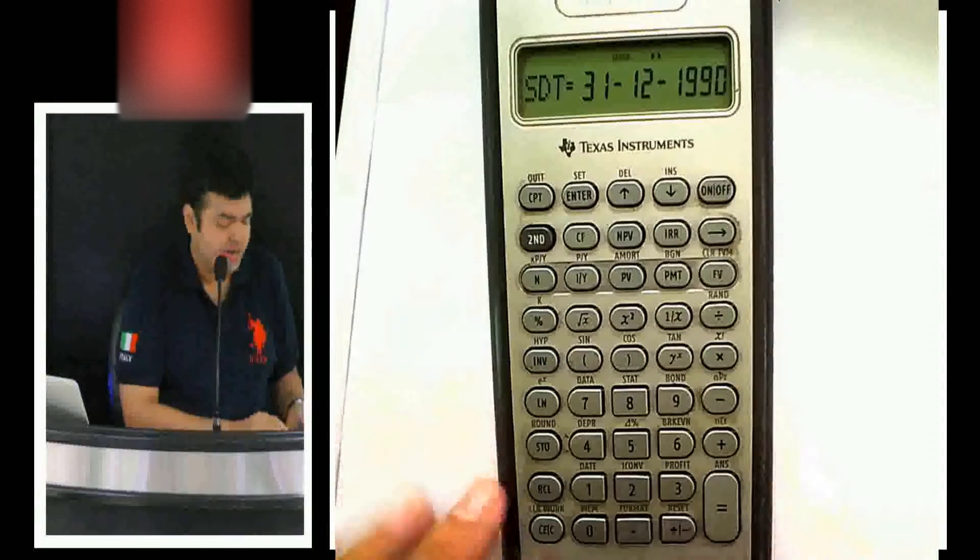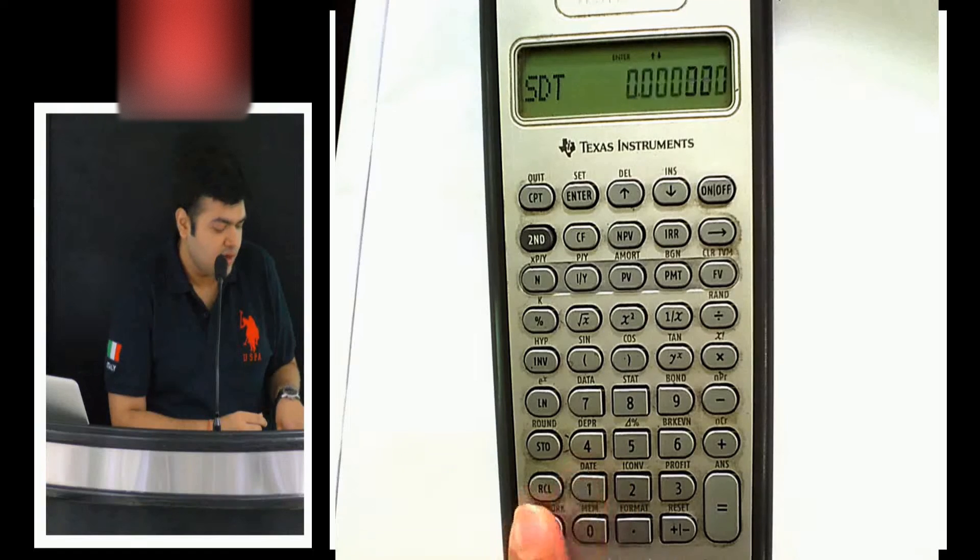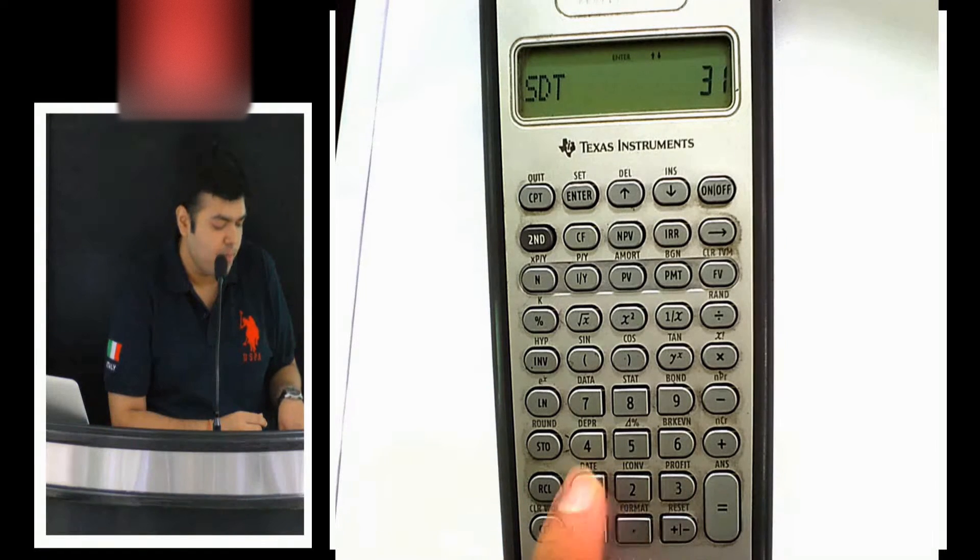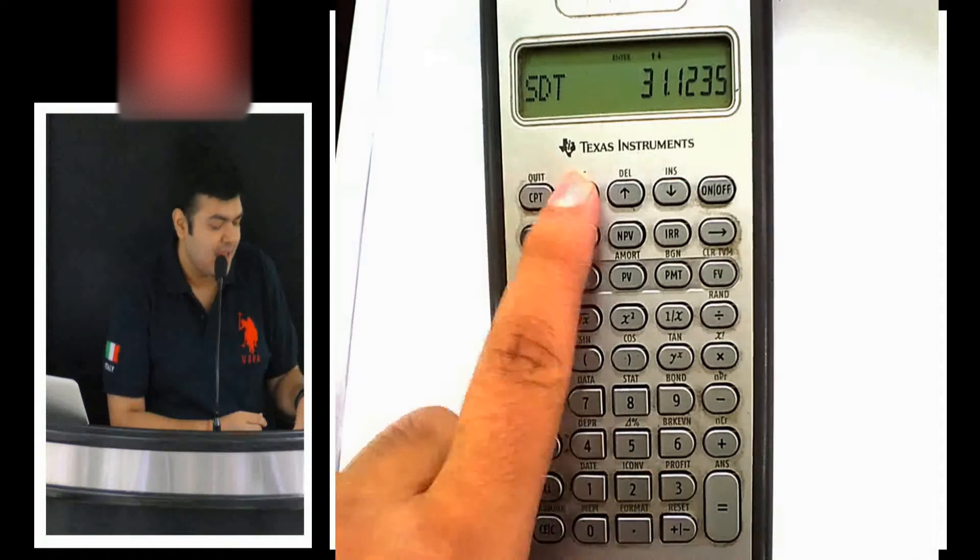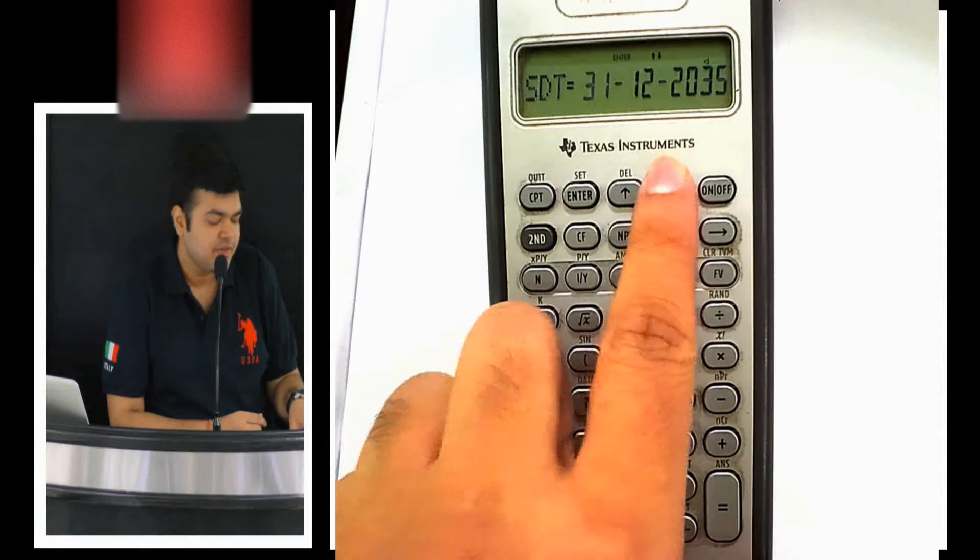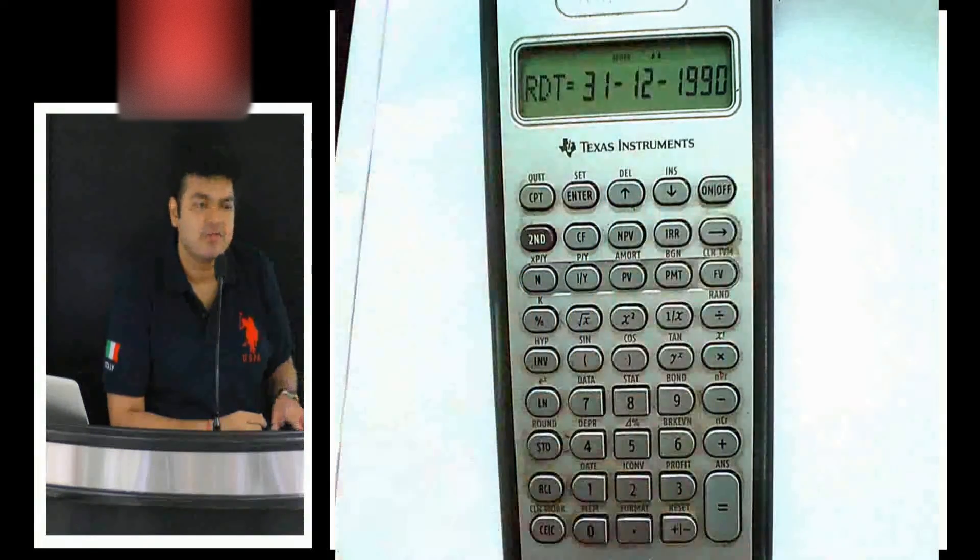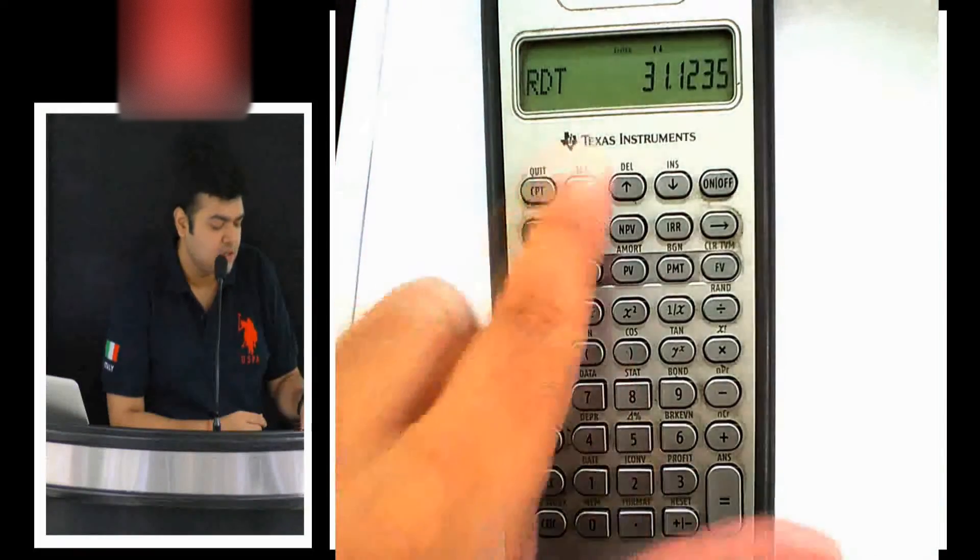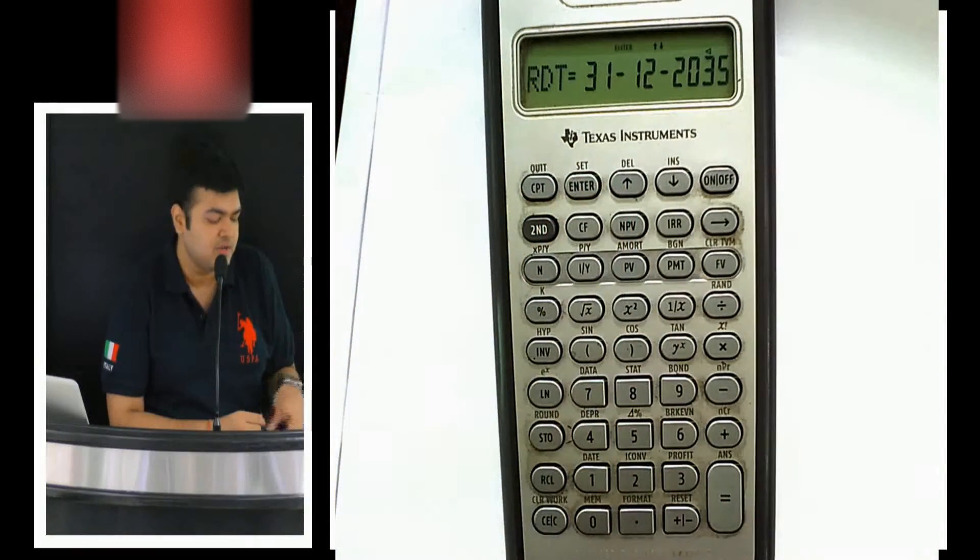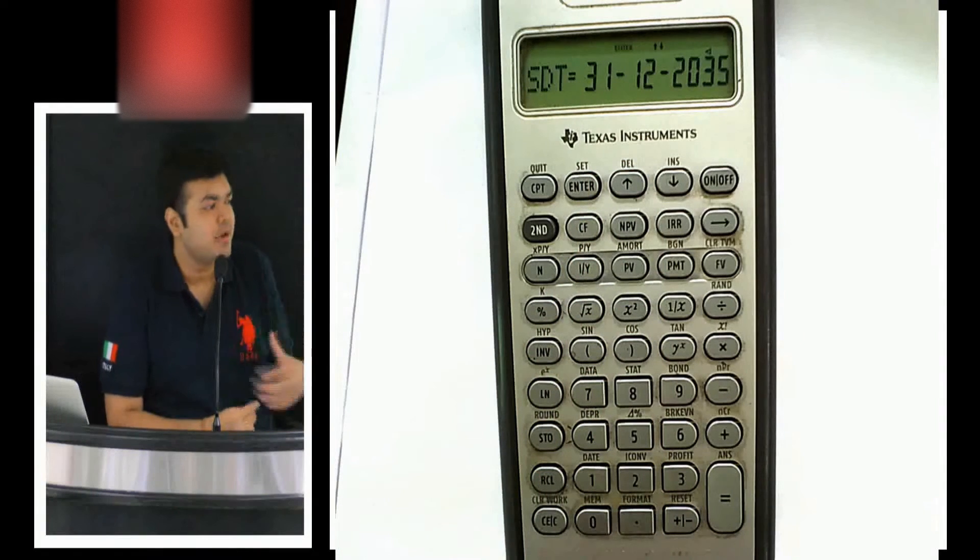The settlement date is 31.12.2035. Wait, sorry, that is the redemption date. I'll rectify it. 31.12.2035 is your redemption date. The settlement date, that is today when we are buying or selling the bond, is 25.06.2017.